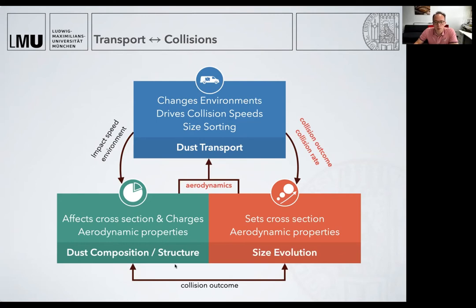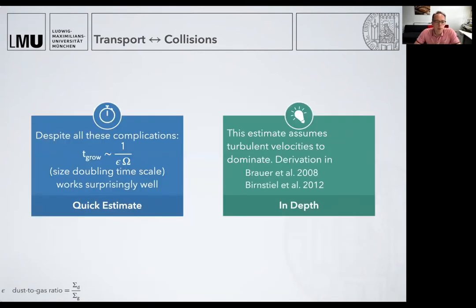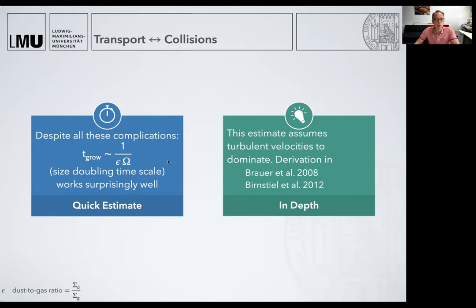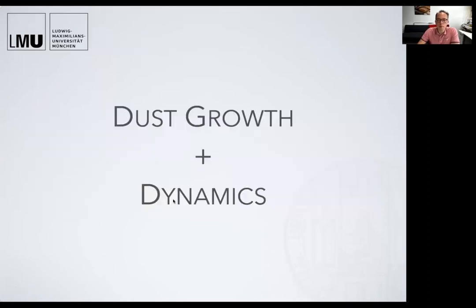All of these three parts — dust transport, collision speeds, and size evolution — are strongly interlinked with each other; we can't really decouple these processes. But despite all of these complications, we can boil down all of these complicated collisional growth effects into a very simple timescale: the growth timescale, or size-doubling timescale. It works surprisingly well, though of course not everywhere. It looks similar to all the other timescales — it's proportional to the orbital timescale, and in this case we divide by the dust-to-gas ratio epsilon.